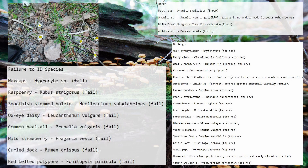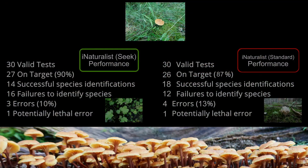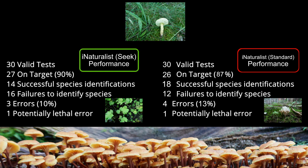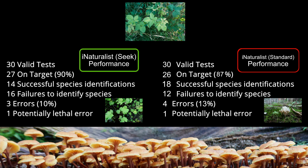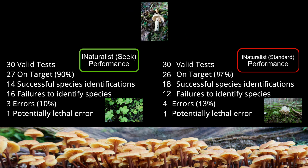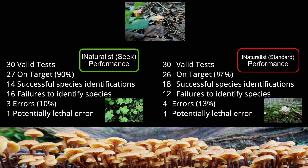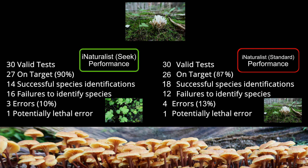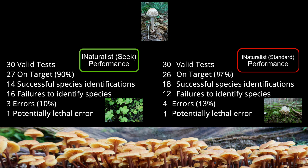iNaturalist standard also misidentified the species of coral fungus it was shown, and entirely misidentified above genus the wild carrot photos presented to it. Of the 30 valid tests, Seek was on target 27 times or 90%. The iNaturalist standard app was on target 26 times or 87%. iNaturalist Seek presented 14 successful species identifications, a 47% success rate. The iNaturalist standard app did markedly better, presenting 18 successful species identifications, a 60% success rate. Seek failed to identify to species 16 times or 53% of the time, whereas the standard app failed 12 times or 40% of the time. Finally, Seek presented 3 errors with 1 potentially deadly error, while the standard app presented 4 errors with 1 potentially deadly error.